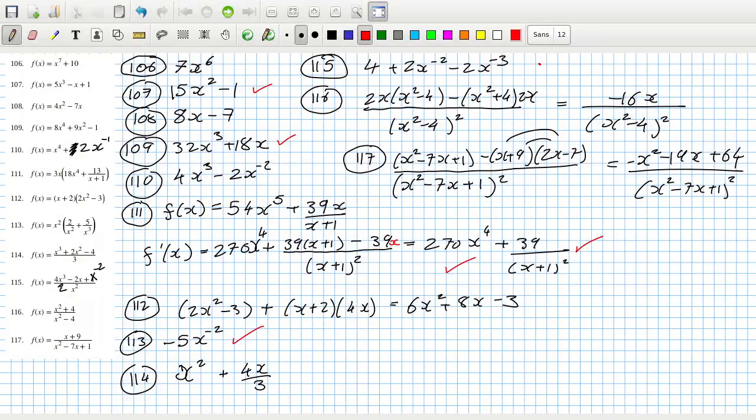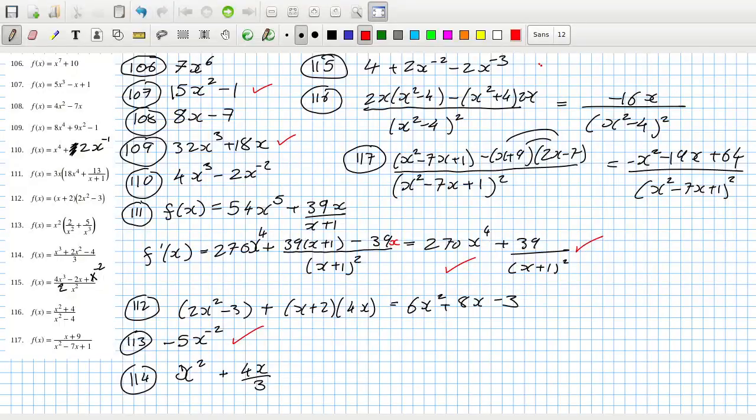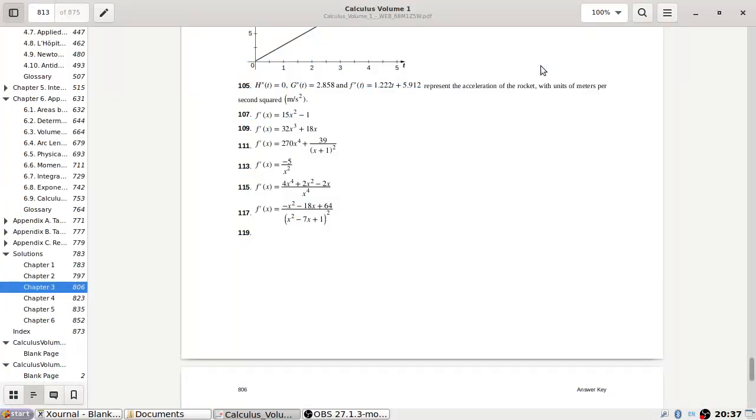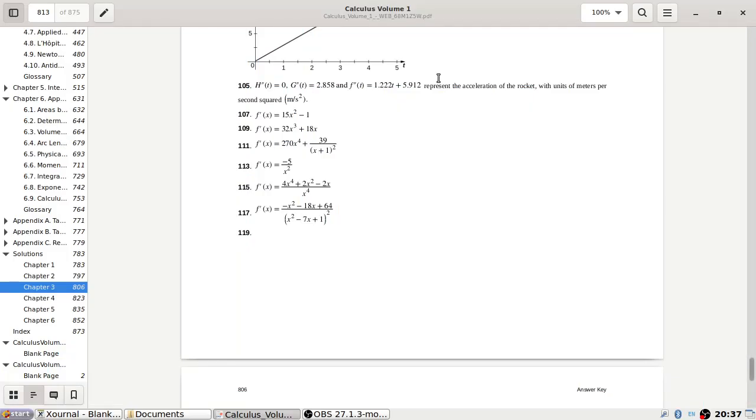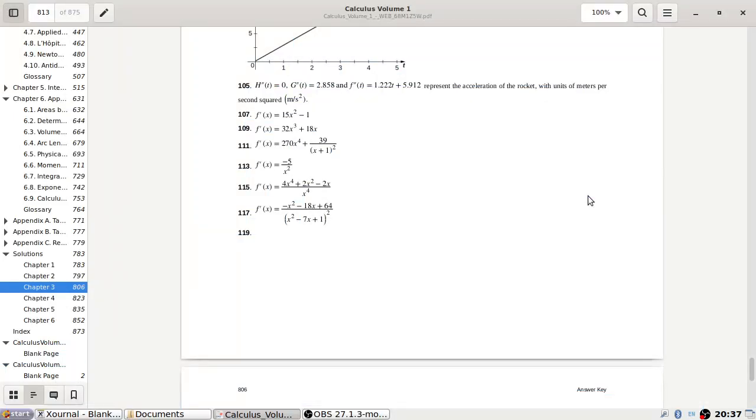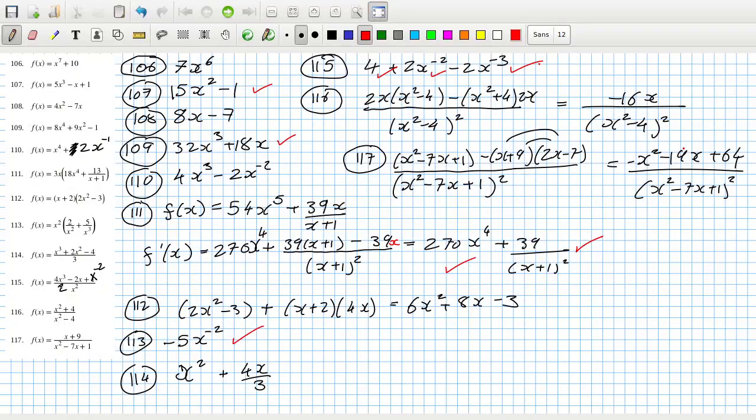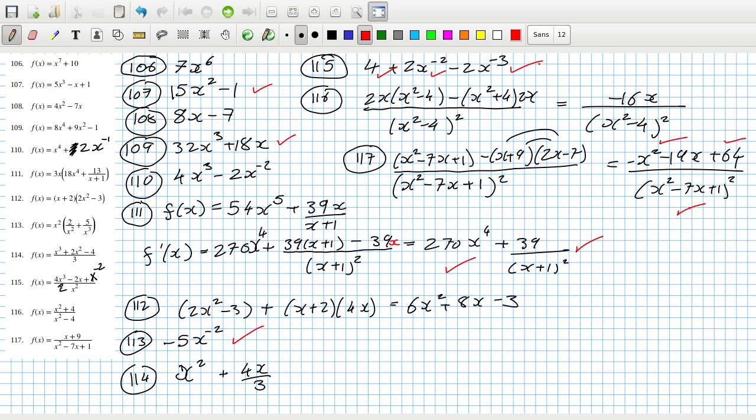Not simplified, interesting. 2 over x squared minus 2 over x cubed, yeah that's right. Minus x squared, minus x squared, I've miscalculated in my head.